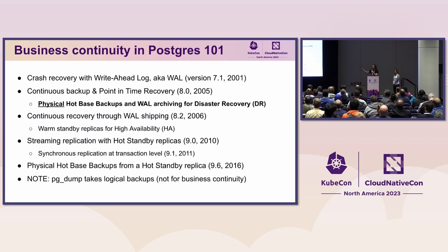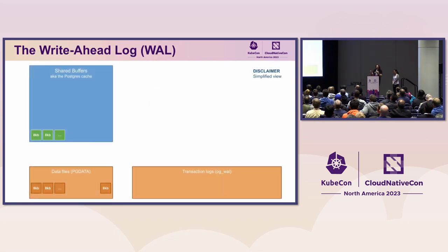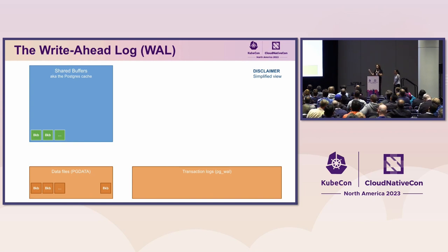This presentation doesn't cover PGDump, as PGDump only generates SQL-level snapshots of the database and these are not suitable for business continuity. Instead, we focus on continuous backup. Postgres writes data in eight-kilobyte pages inside the directory called PGData, while transactions are stored in write-ahead log files also known as PGWal. Shared buffers serve as a cache for better performance, and each connection with a client is managed by a dedicated process known as a Postgres backend.